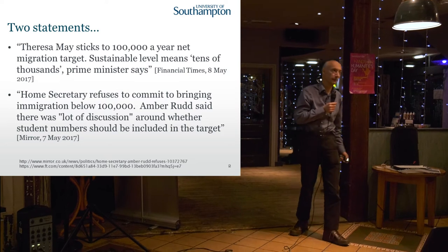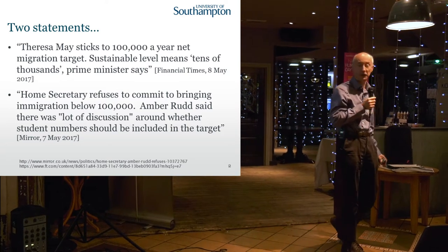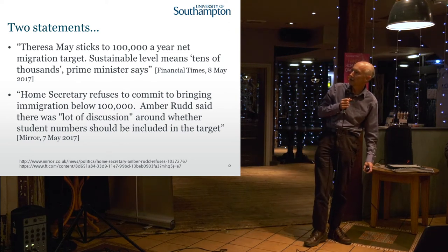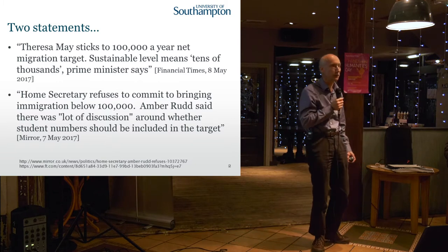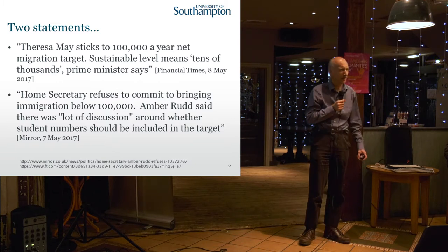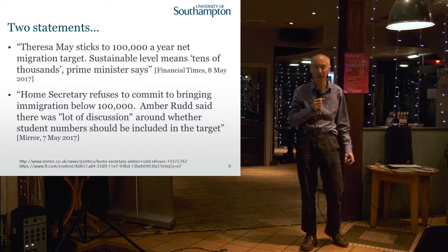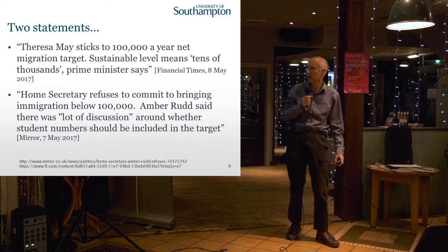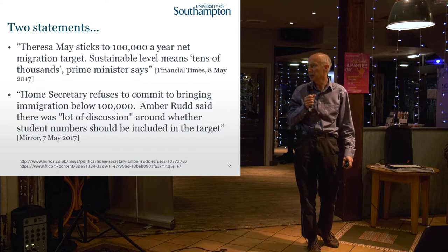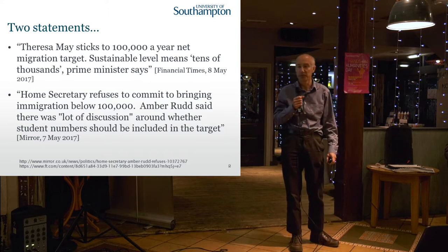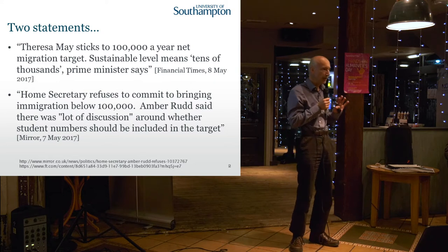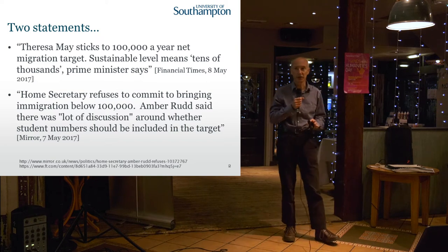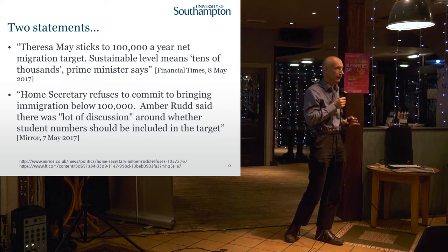Two statements from the media, different politicians, same week, earlier this year. 'Theresa May sticks to 100,000 a year net migration target. Sustainable level means tens of thousands, Prime Minister says.' It's kind of vague, isn't it — 100,000 and tens of thousands. The day before: 'Home Secretary refuses to commit to bringing immigration below 100,000.' Amber Rudd said there was a lot of discussion around whether student numbers should be included in the target. So the message here is a lot of important people are talking about it but no one will commit to any very exact numbers.